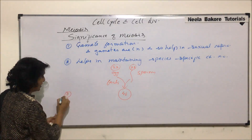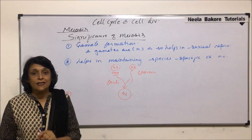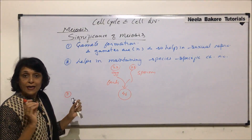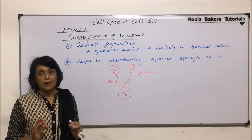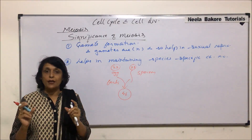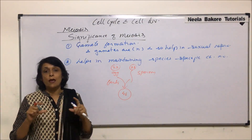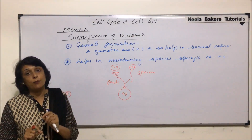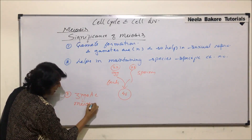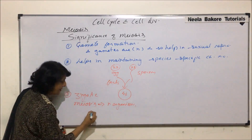Another significant role of meiosis is seen in organisms which show a haplontic life cycle — for example, Chlamydomonas. They are haploid and normally reproduce asexually by mitotic division. But whenever they have to undergo sexual reproduction, two haploid Chlamydomonas fuse to form a diploid zygote, and this zygote undergoes meiosis to produce haploid cells which live as haploid Chlamydomonas. So meiosis helps in zygotic meiosis, which results in the formation of haploid organisms.